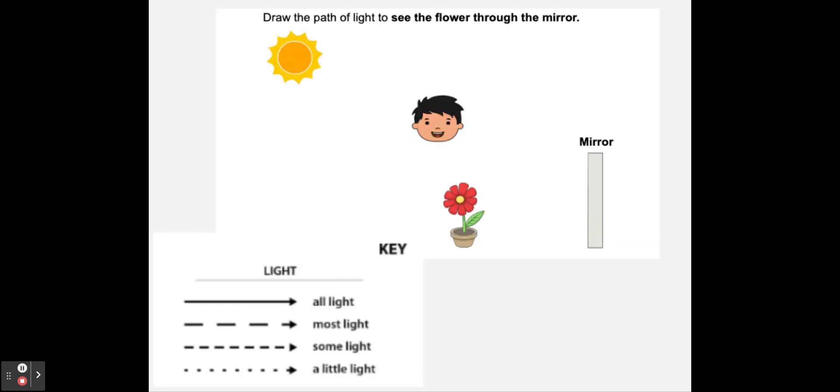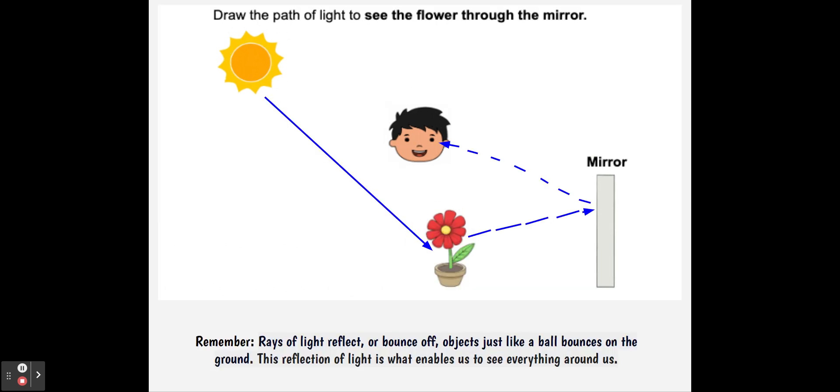The last one. Draw a path to see the flower through the mirror. Same key. What happens? All of the light goes to the flower, some of the light goes to the mirror, and a little of the light goes to the eyes. And that's how we can see the flower.